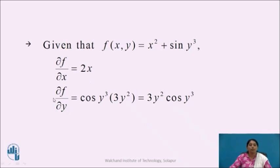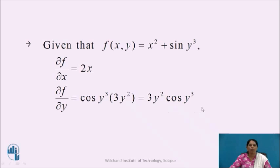Now, differentiating f partially with respect to y gives us ∂f/∂y. The derivative of x² will be 0 as x is treated as constant. So we get ∂f/∂y by differentiating sin(y³), which gives ∂f/∂y = 3y² cos(y³).